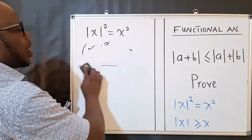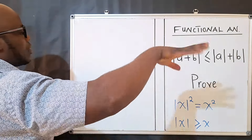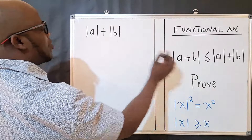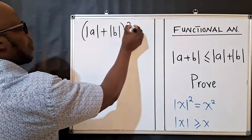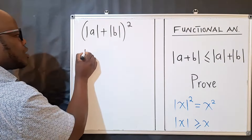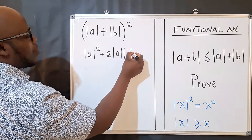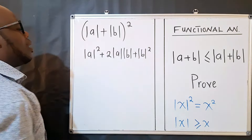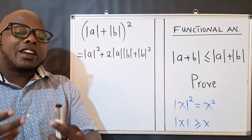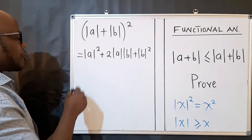Now let's apply these two properties to our proof. I'll work from the right-hand side: absolute value of a plus absolute value of b. I'll introduce a power of 2, so squaring this expression gives (|a| + |b|)² = |a|² + 2|a||b| + |b|². This is obtained by multiplying the expression by itself.